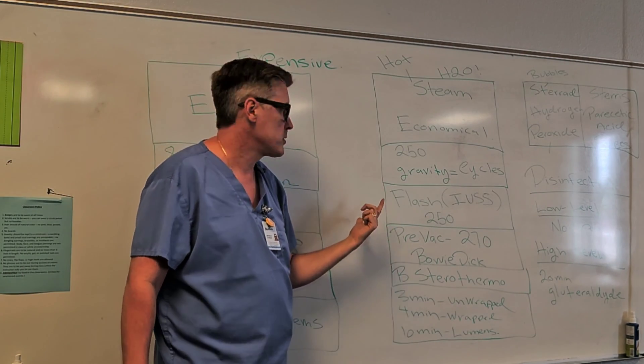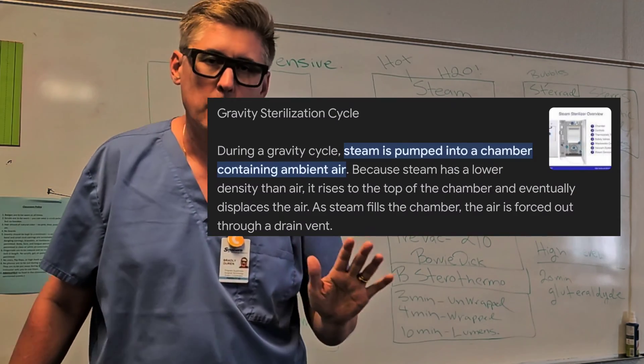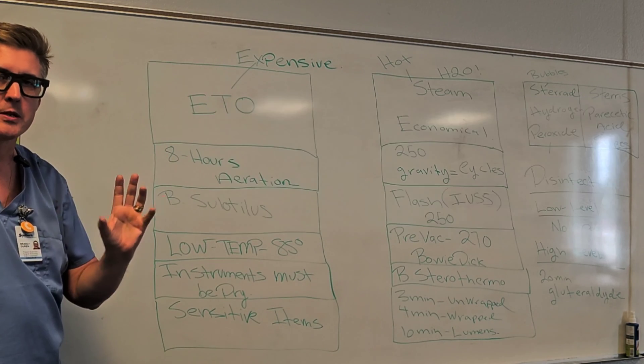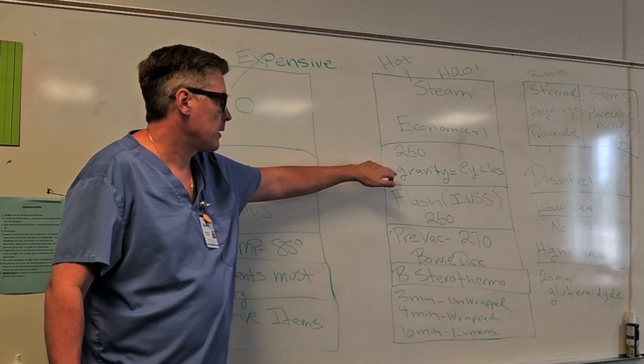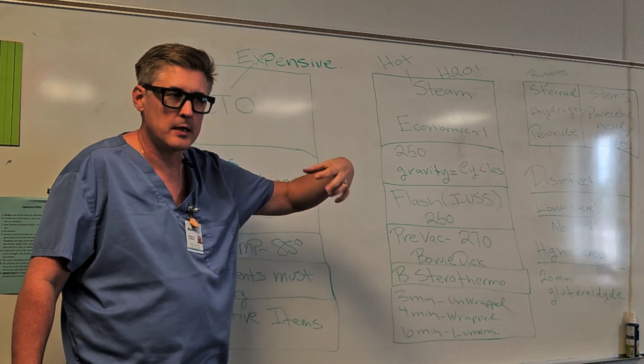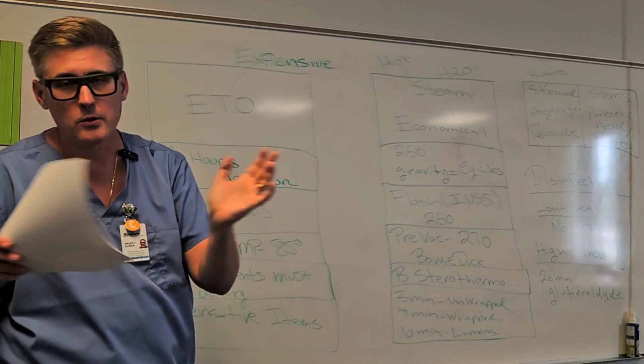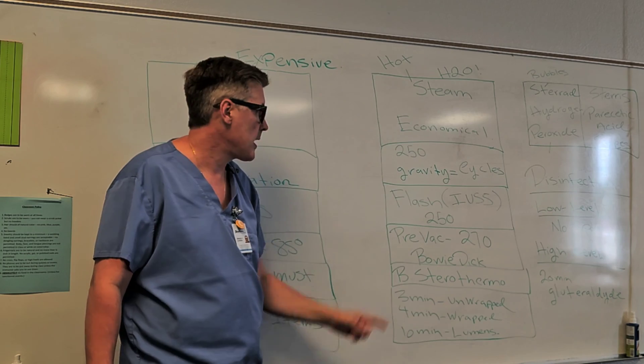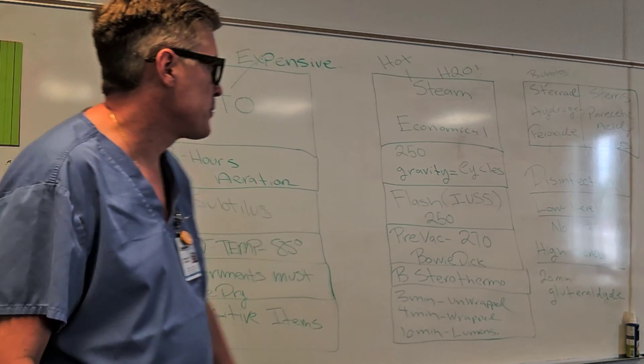Now there's some temperature parameters I want you to remember. A gravity displacement system. When you hear gravity equals cycles, you see on a question it says gravity equals cycles. And 250 is typically where gravity steam sterilizer is going to be at. 250, right? It can range from 250 to 270, but you hear gravity on the CST exam. It's more likely the 250 parameter, temperature wise.